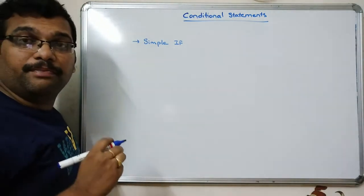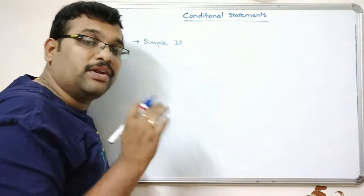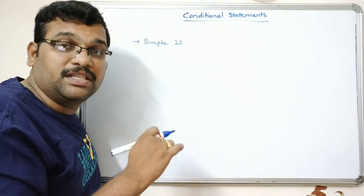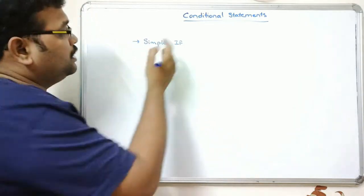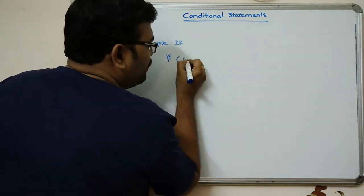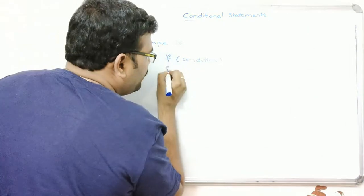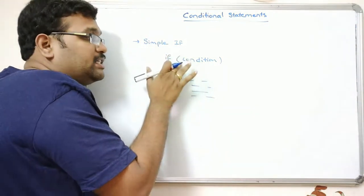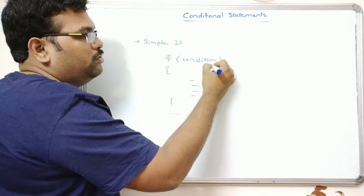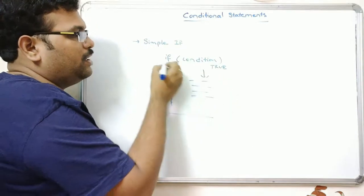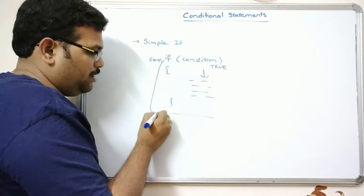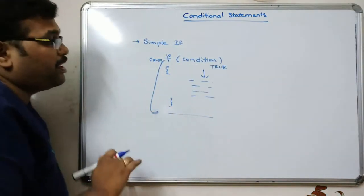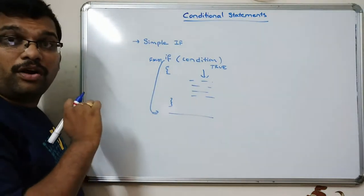Simple if: here only one condition is given at the if. If the condition is true then only the if block will be executed — the control enters the if block. We are not writing any else part, so if the condition is false nothing will be done. The syntax is: if followed by the condition, then the block of statements. If the condition is false, all those statements will be skipped.